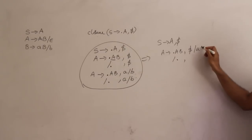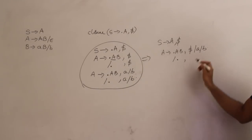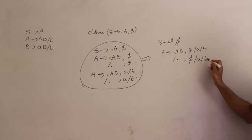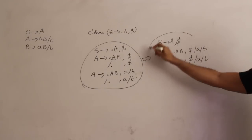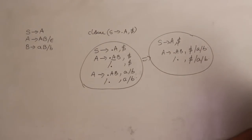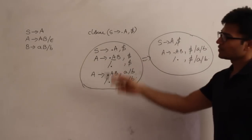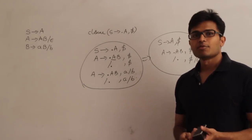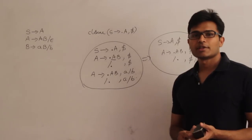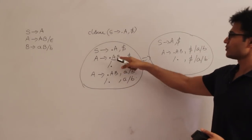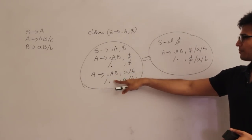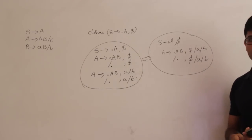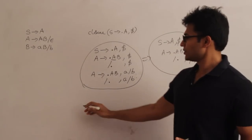Instead of adding A productions two times, we can merge them. We write S derives dot A comma dollar, and merging the two sets of A productions: A derives dot AB and dot, with look-aheads dollar and A,B combined. This avoids duplication — just accumulate the look-aheads.